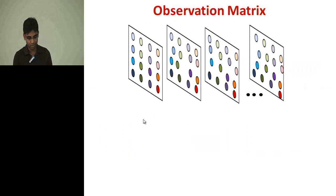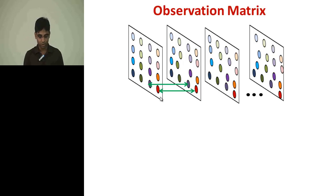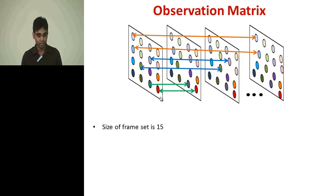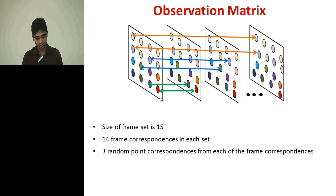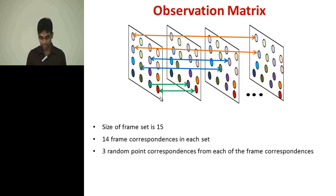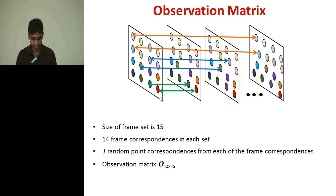The observation matrix is calculated as follows: given a frame set, we know the trajectories of each pixel, so we can establish correspondences from the first frame to the second, first to third, and so on. Our frame set length is 15 frames, giving 14 frame correspondences. For each frame correspondence, we choose three random point correspondences, giving 42 point correspondences total. Thus, the observation matrix size becomes 42 by 36, matching the number of MMFM coefficients.